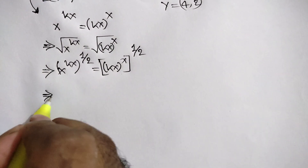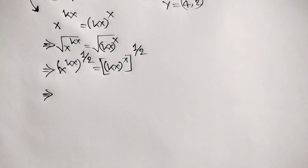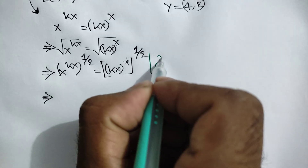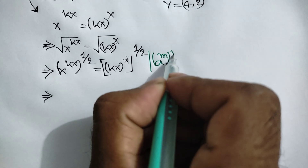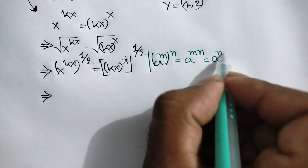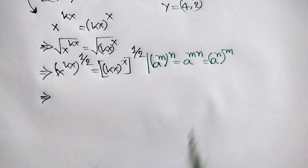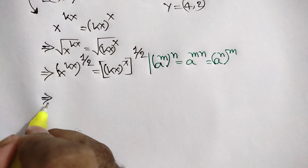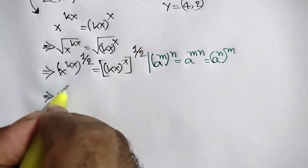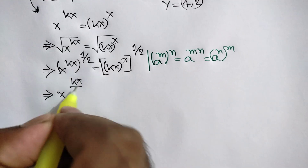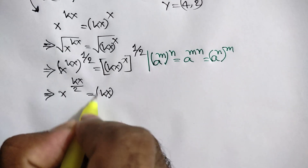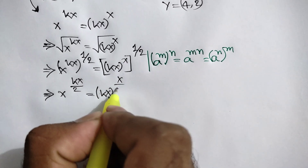We know that a to the power m, whole to the power n, is equal to a to the power m times n. So we can write x to the power kx times one-half, which is kx over 2, is equal to kx whole to the power x over 2.